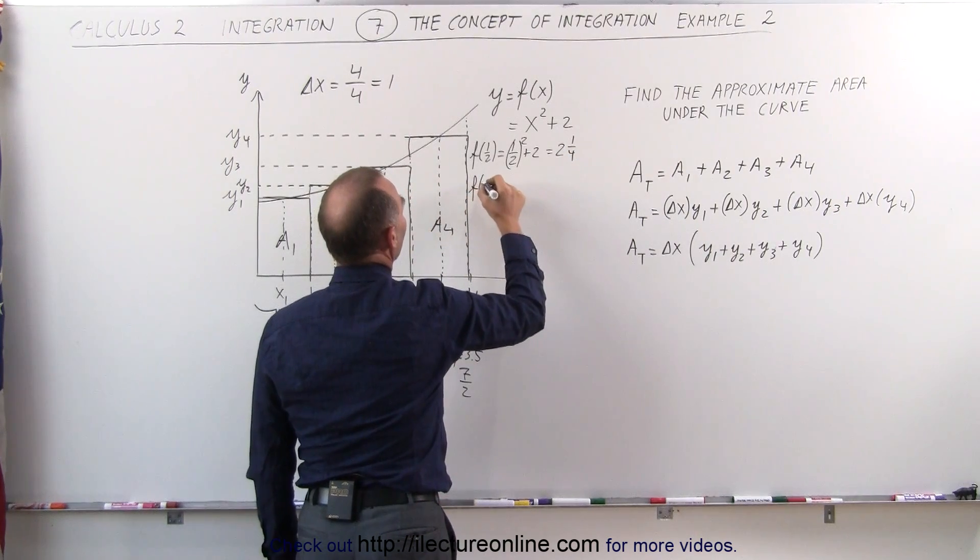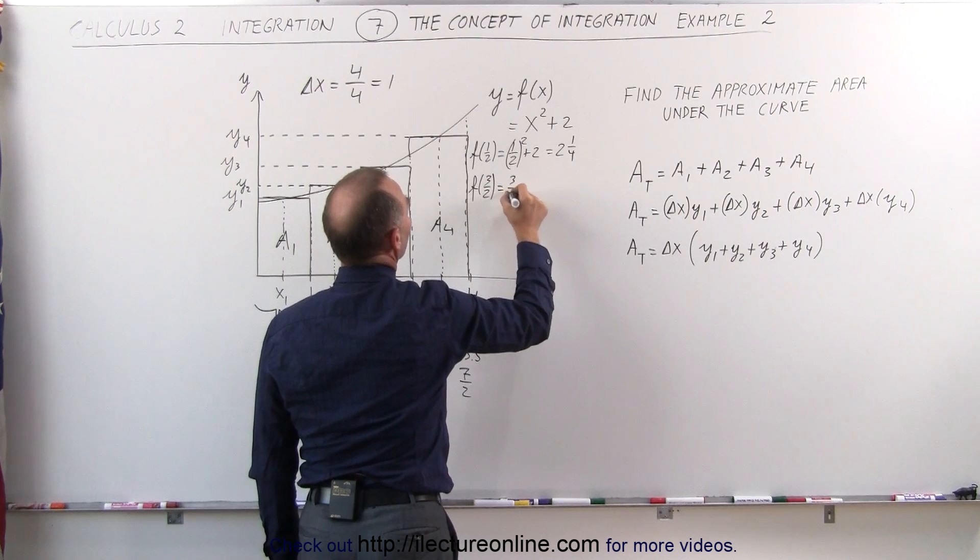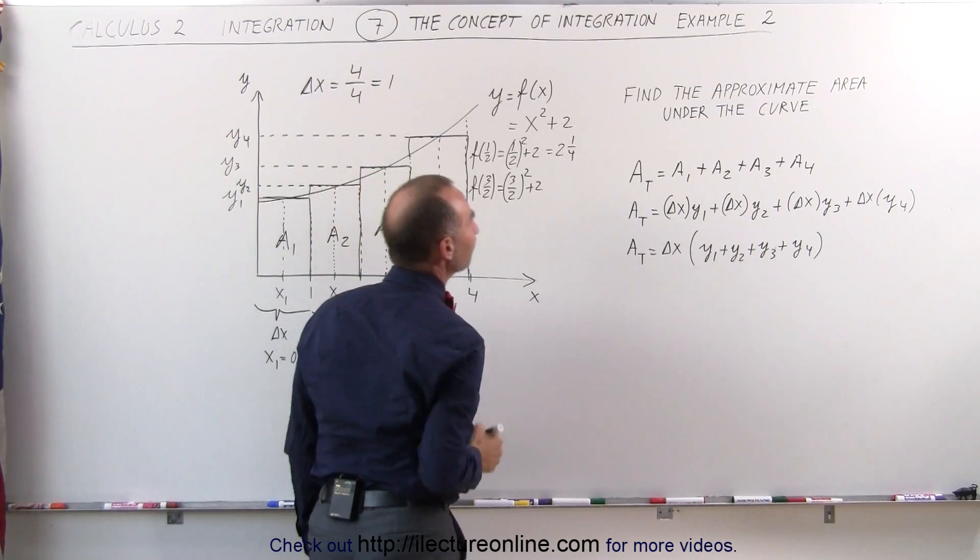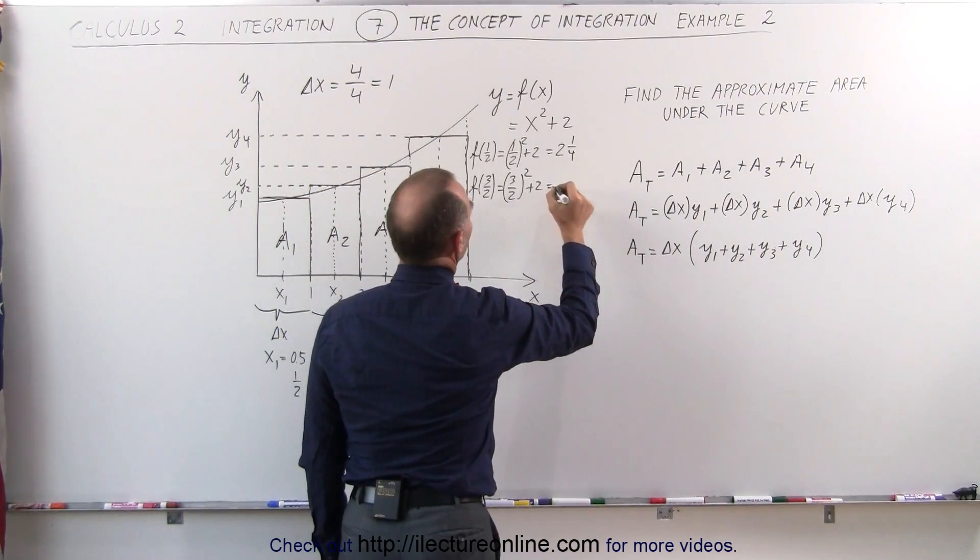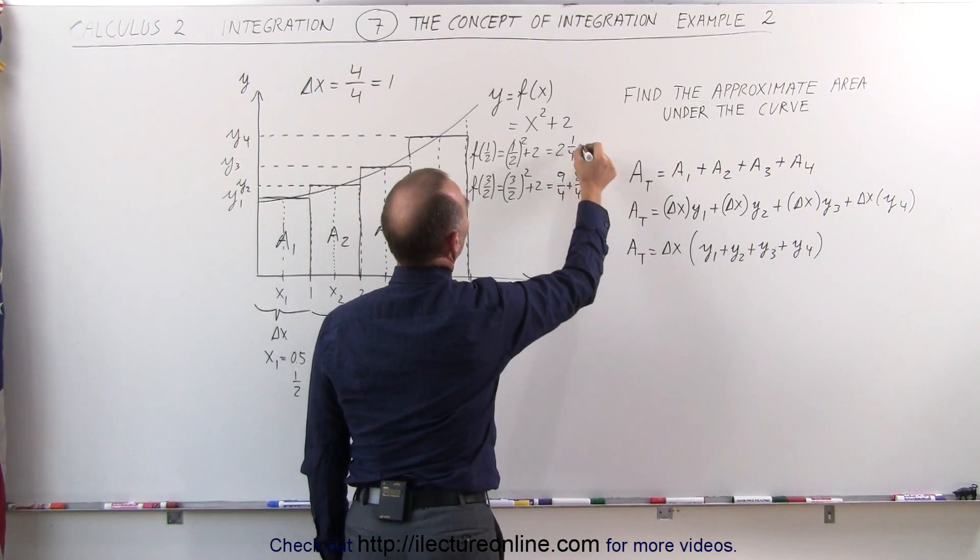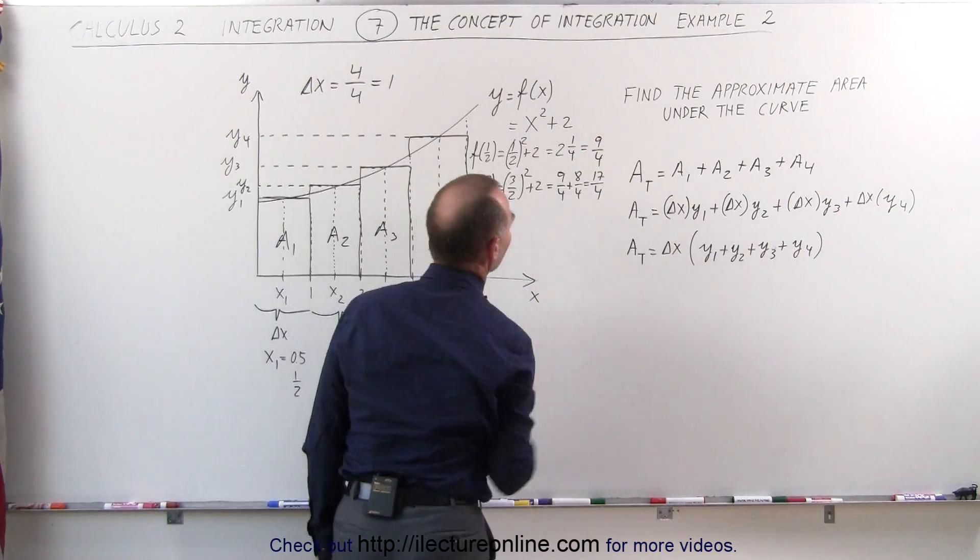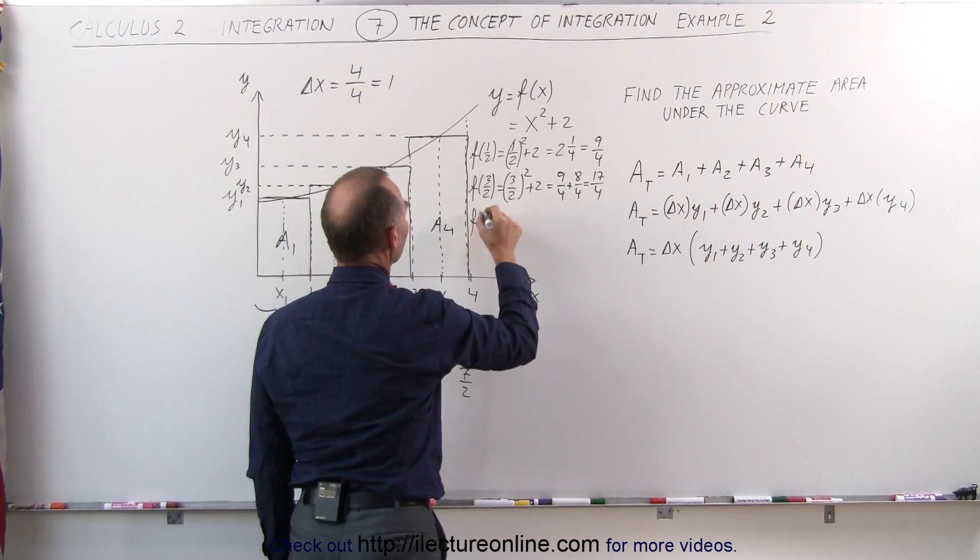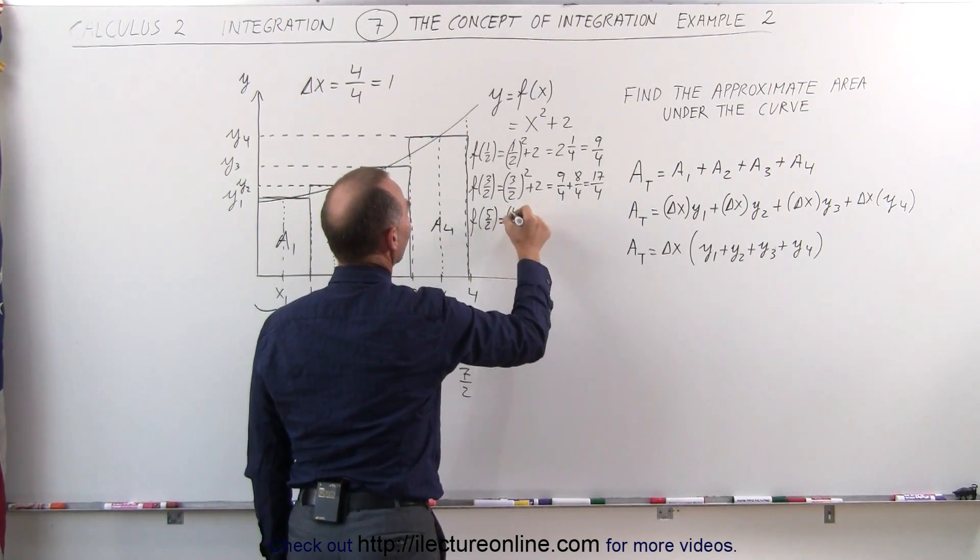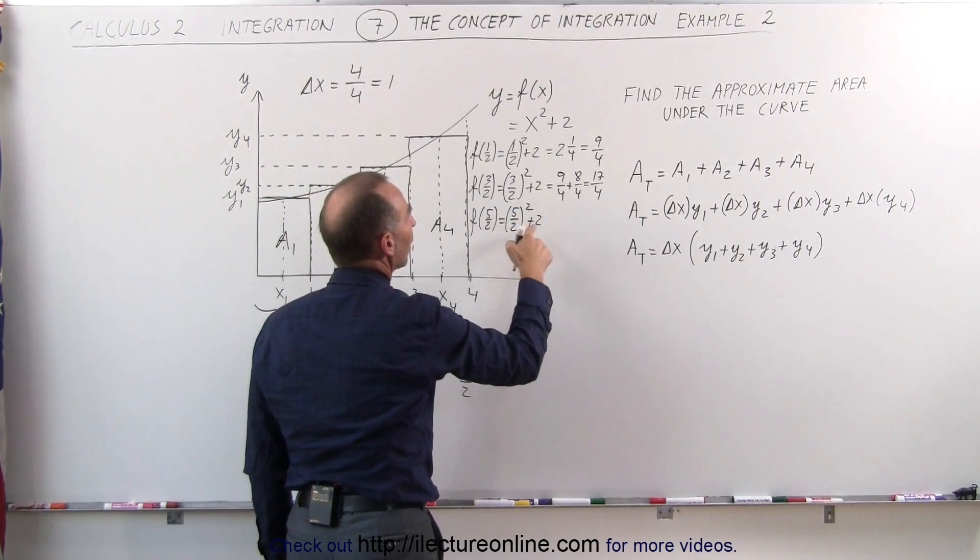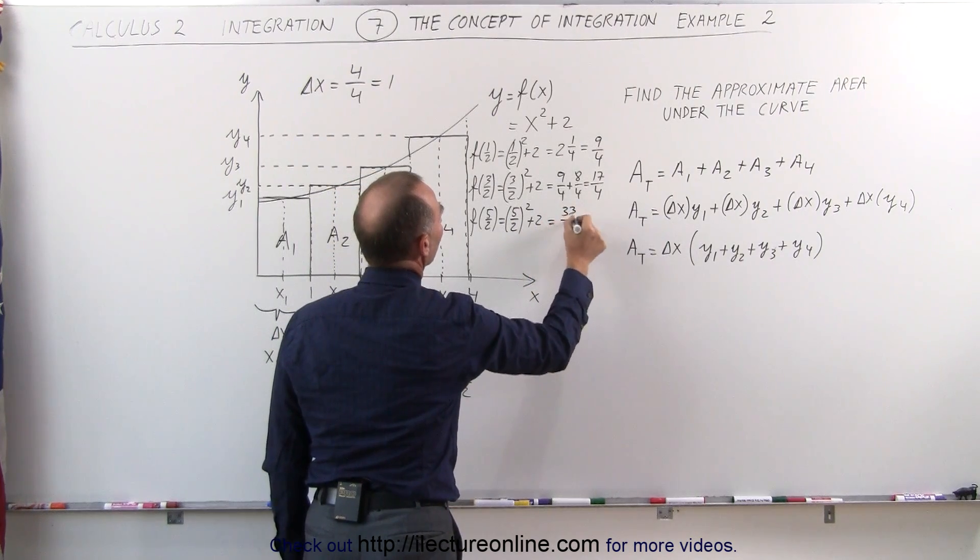The function evaluated at 3/2 is equal to (3/2) squared plus 2, that would be 9/4 plus 2, which is 8/4, that would be 17/4. The function evaluated at 5/2 is equal to (5/2) squared plus 2, that would be 25/4 plus 8/4, that would be 33/4.